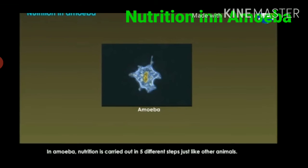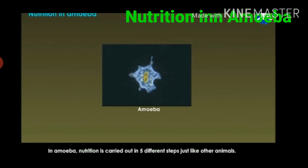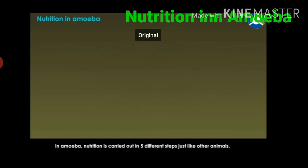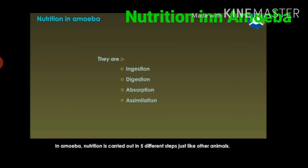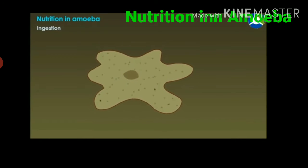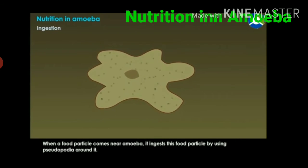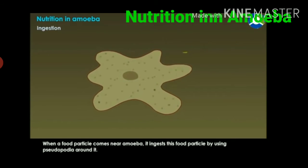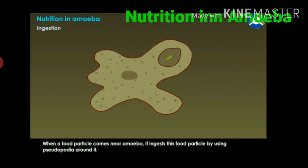Nutrition in amoeba is carried out in five different steps, just like other animals: ingestion, digestion, absorption, assimilation, and egestion. So for ingestion - when a food particle comes near amoeba, it ingests the food particles by using pseudopodia around it.